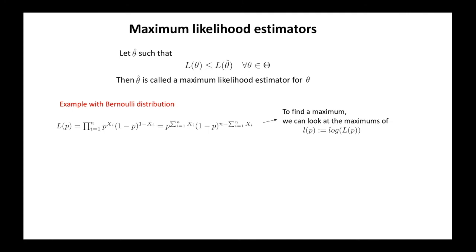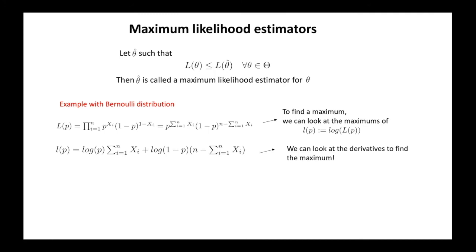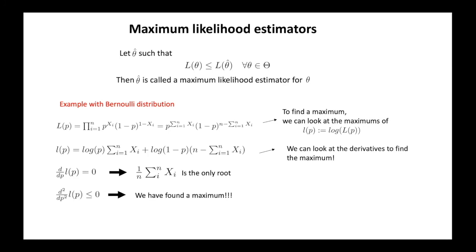Let's see this with the example of the coin. We have found the expression for the likelihood. In order to find a maximum of the function L(p), it is easier to look at the logarithm of this function, the so-called log likelihood. The reason is that the products are transformed into sums, and this makes the calculation easier. The maxima are the same, since the log is a monotonic function. After having calculated the log likelihood, we look at the zeros of its derivative to find the maxima. We found just one root, that is the sample mean, and since the second derivative is non-positive, we know that we have found the unique maximum of this function. Hence, we have just found the maximum likelihood estimator for the parameter p.